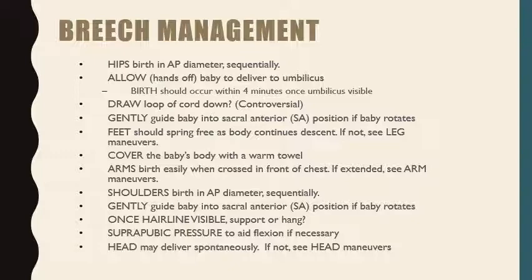If the baby tries to rotate out of the sacral anterior position — which is optimal — gently guide the baby back using a towel. The feet should spring free as the baby continues to descend, but if not, employ small maneuvers to deliver the legs. Cover the baby's body with a warm towel. The arms should birth easily if they're crossed in front of the chest.